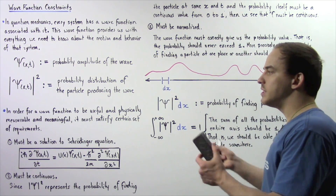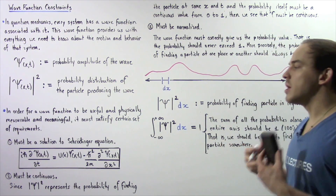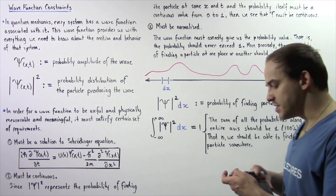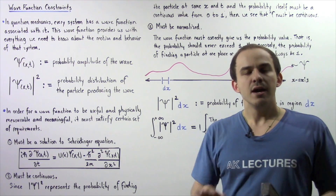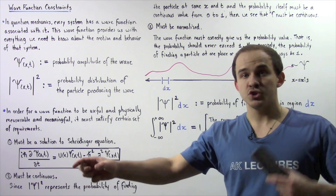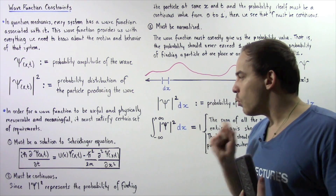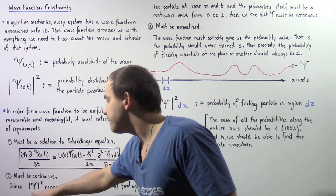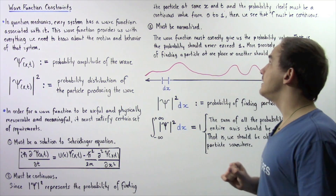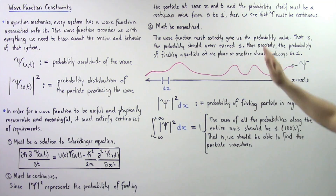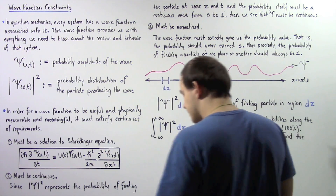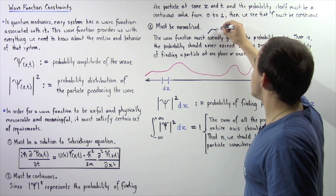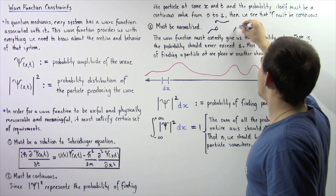Assuming our wave function satisfies requirement number 1, what else must it satisfy? Requirement number 2: the wave function must be a continuous function. That's because probability must also be a continuous value ranging from 0 to 1. Since the square of the absolute value of ψ represents the probability of finding our particle at position x and time t, the wave function itself must also be continuous. It cannot stop here and then continue upward — it must be a continuous function.